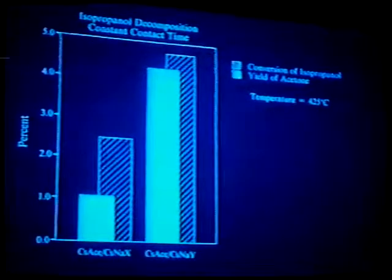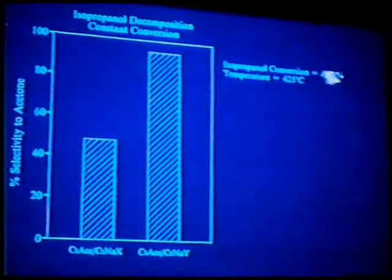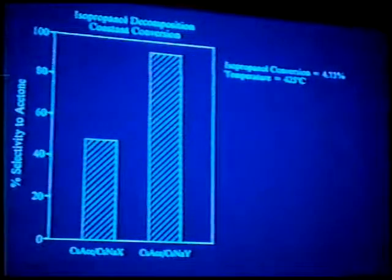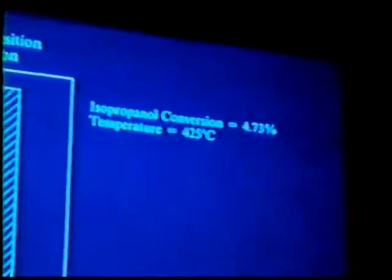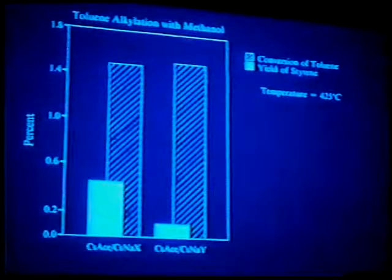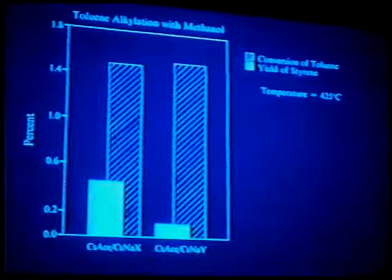Looking at isopropanol decomposition at 425°C at constant contact time — conversion of isopropanol and yield of acetone, the difference being propylene — our impregnated Y zeolite outperforms the X by about three-fold. At constant conversion of 4.73% isopropanol, the Y is around 95% selective to acetone while the X is near 50%. At this point we're quite excited — we have a nice catalyst performing well at 425°C. However, looking at the toluene alkylation with methanol results — conversion of toluene and yield of styrene, the difference being ethylbenzene with no xylenes observed — the materials behaved quite similarly. We were disappointed; we expected the Y to be two to five times more active than the X.